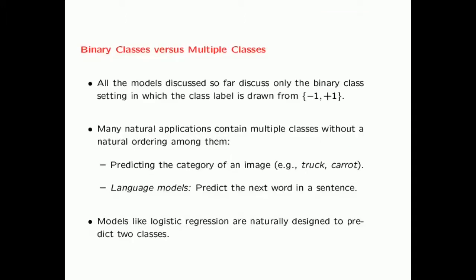In the binary class setting, the labels are always drawn from minus 1 or plus 1. However, in the multi-class setting, you might have multiple classes without a natural ordering among them. A classical example of this setting is image classification. For example, the ImageNet dataset might contain 1000 categories corresponding to different categories of images such as a truck, a carrot, or a cat.